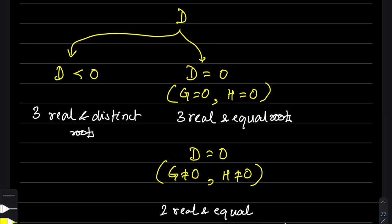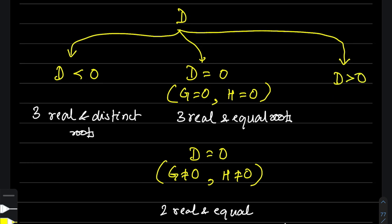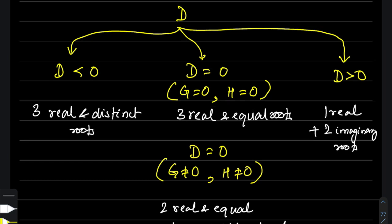When the discriminant is positive, you will have one real root and two non-real or imaginary roots. The x-axis is cut by the cubic polynomial function at only one point, and two roots are imaginary. Again, if the coefficients are all real, the imaginary roots will be conjugate pairs of one another.